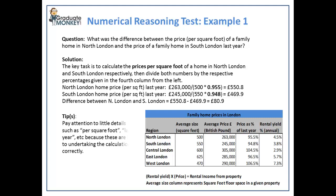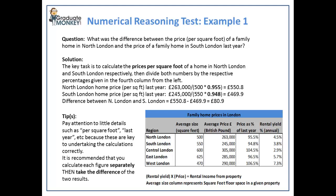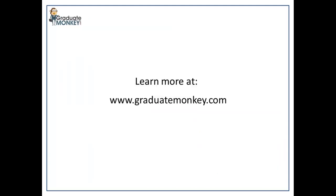Here is a tip: always pay attention to little details such as 'per square foot', 'as a percentage of', etc., because these words imply that you have to divide one figure by another. That's it for now. Comprehensive aptitude test tutorials only on graduatemonkey.com.